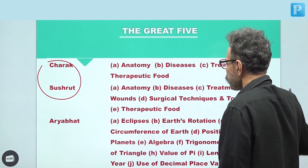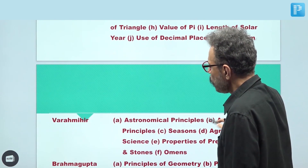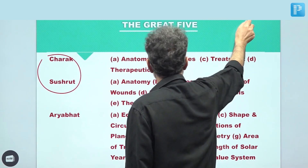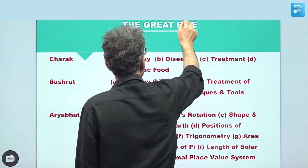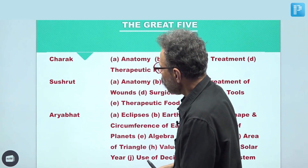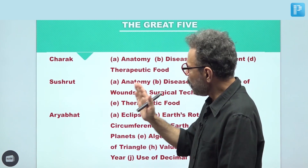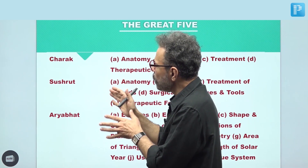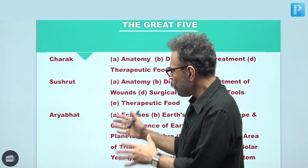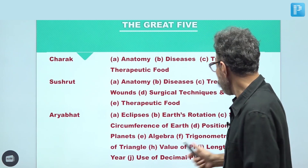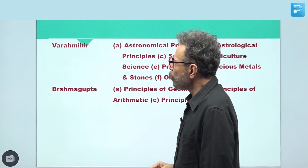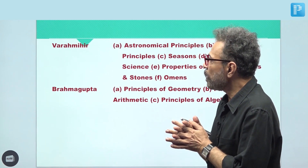Third is Aryabhat. Fourth is Varamir. If I discuss them one by one, that would be more intelligible. So, Charak is associated with medical science or Ayurveda. Sushrut is also associated with medical science or Ayurveda, but their streams are different — Charak with medicine, whereas Sushrut was associated with surgery. Aryabhat was associated with astronomy and mathematics. Varamir was associated with astronomy, astrology, and mathematics also.